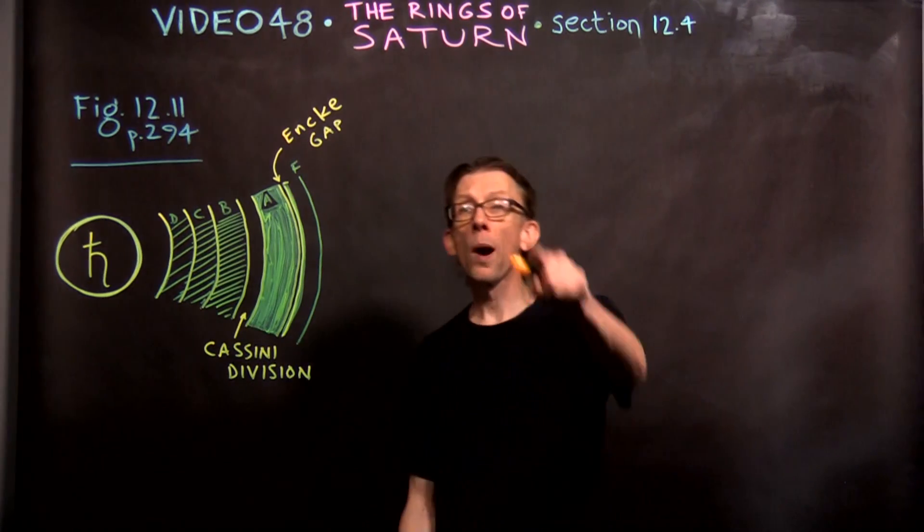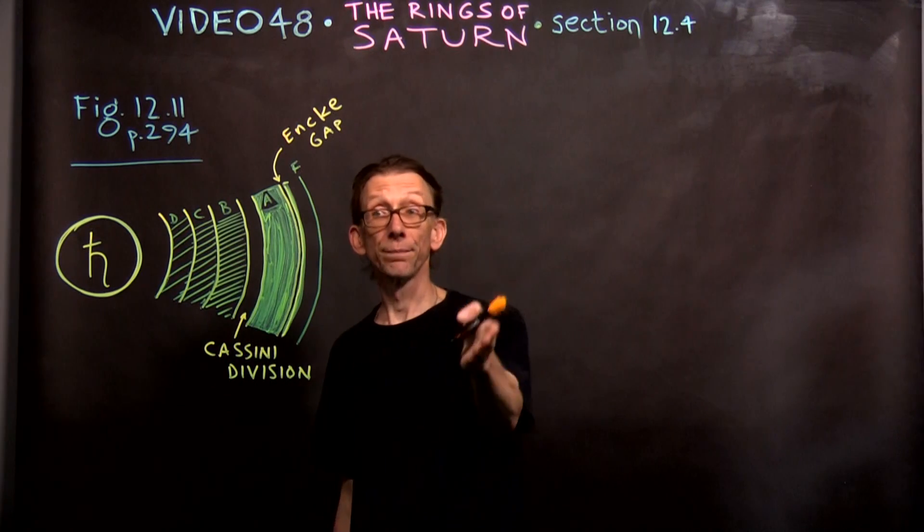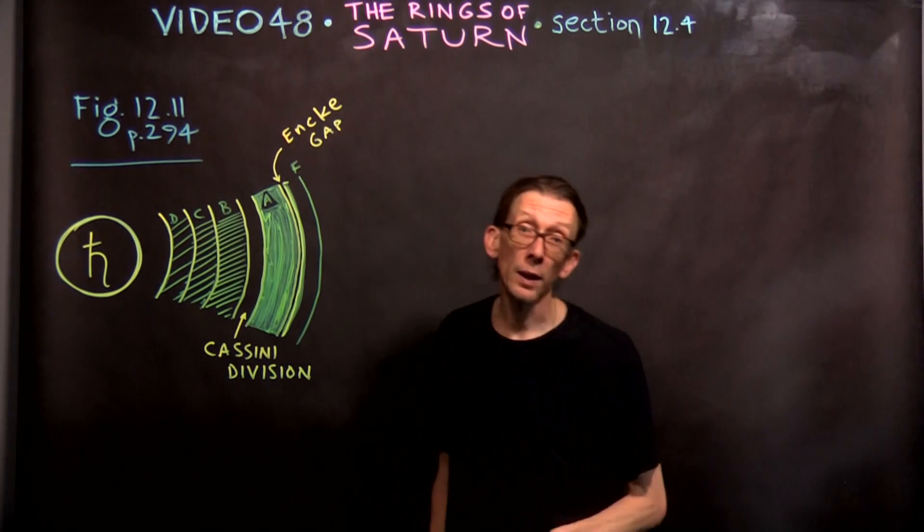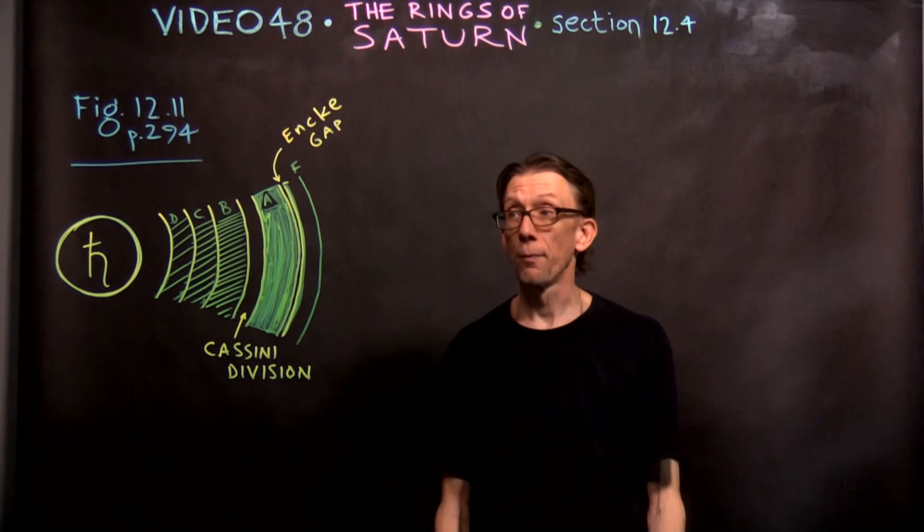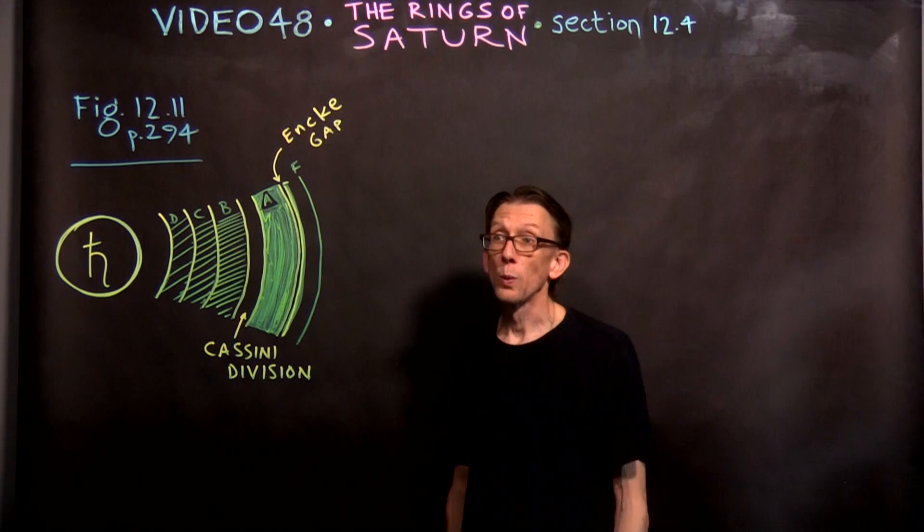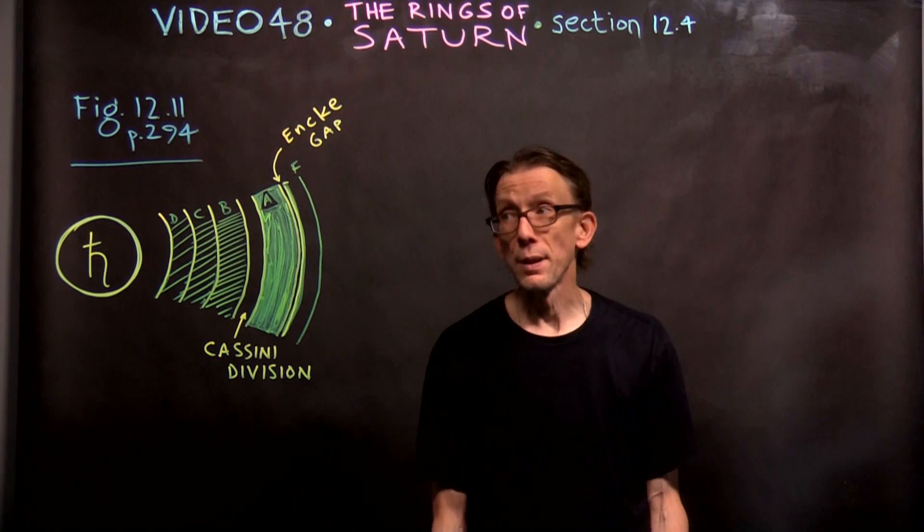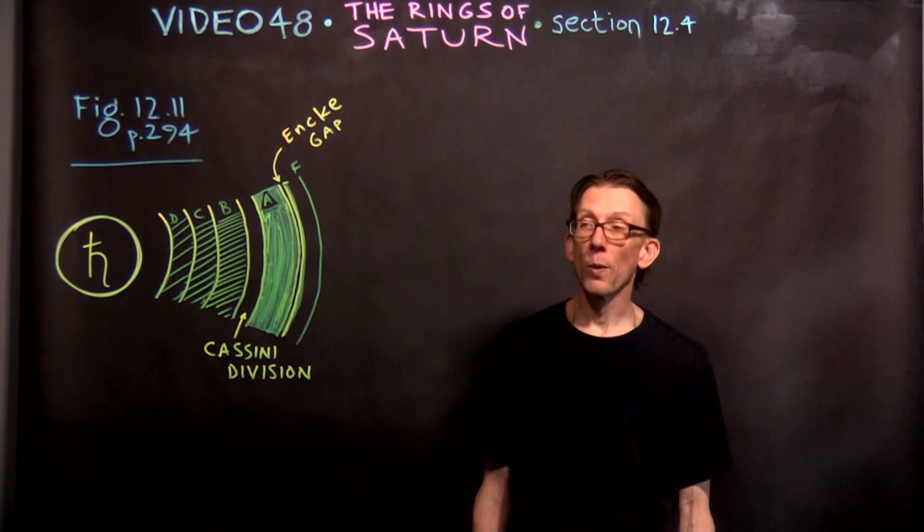Outside the F ring, way out here, and I didn't want to draw because I didn't want to take up space, but out here there's an E ring. We'll talk about the E ring in the next video, but not this one. But there is a sixth major ring known as the E ring. The F and E rings were discovered after the A, B, C, and D rings were. So that's kind of the road map to the rings.